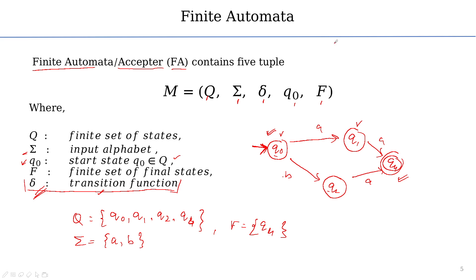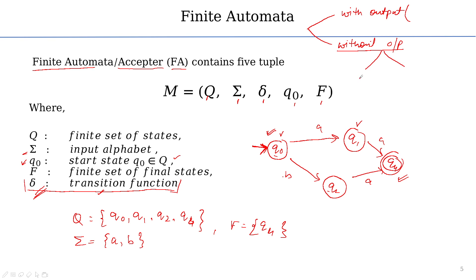Finite automata is of two types: with output and without output. Without output means we are only checking whether a string will be accepted or not — we are not generating an output string. We will work mostly without output. Without output has two types: Deterministic Finite Automata (DFA) and Non-Deterministic Finite Automata (NFA). With output also has two types: Moore machine and Mealy machine.